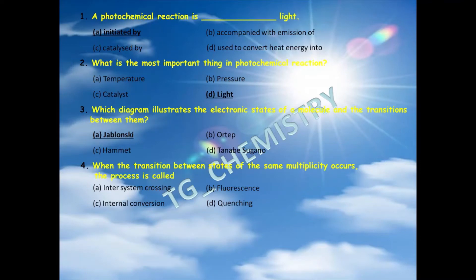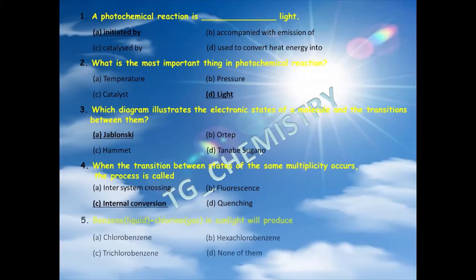Fourth question: when the transition between states of the same multiplicity occurs, the process is called? We need to understand that the transition between states of the same multiplicity in photochemical or electronic transitions is known as internal conversion. So option C is the right answer.